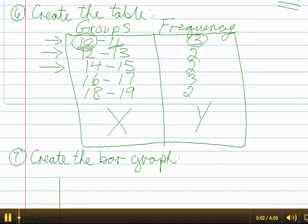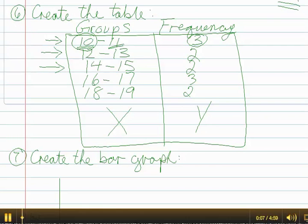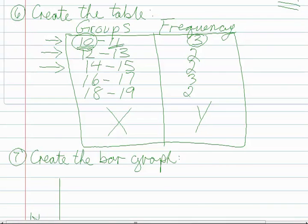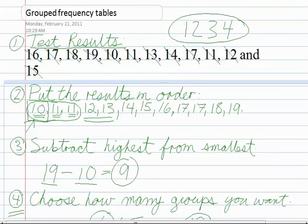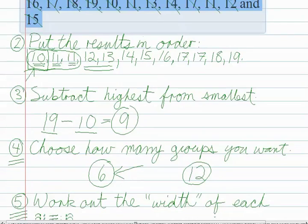Alright, this is part two of creating a grouped frequency table. Just to review what we've already done in part one, I said that in step one we collected all of the marks for twelve children.